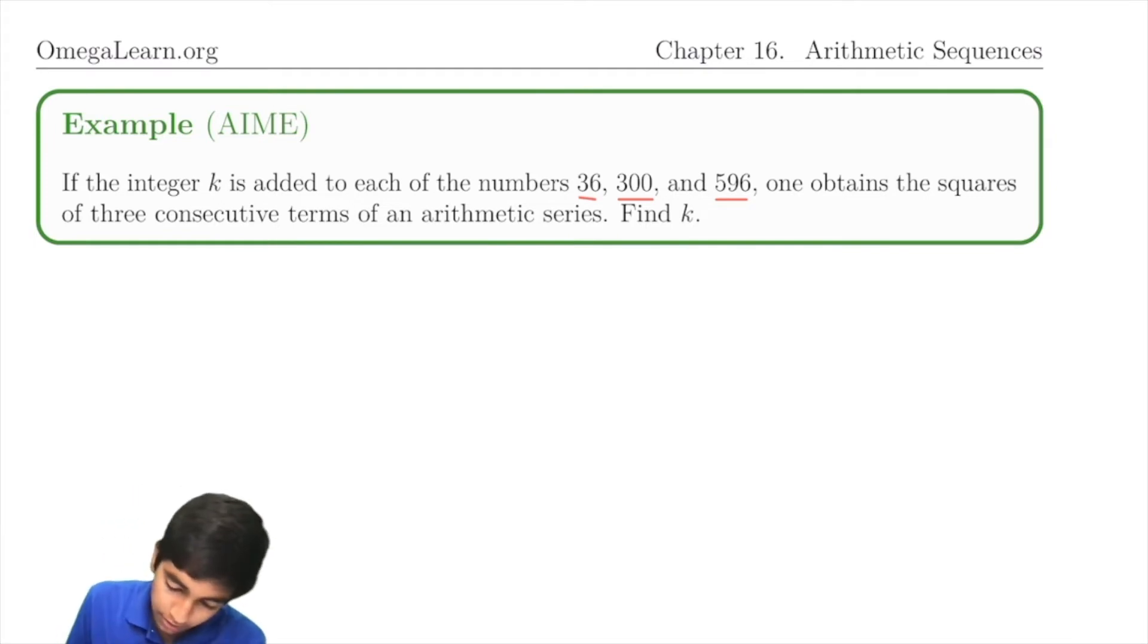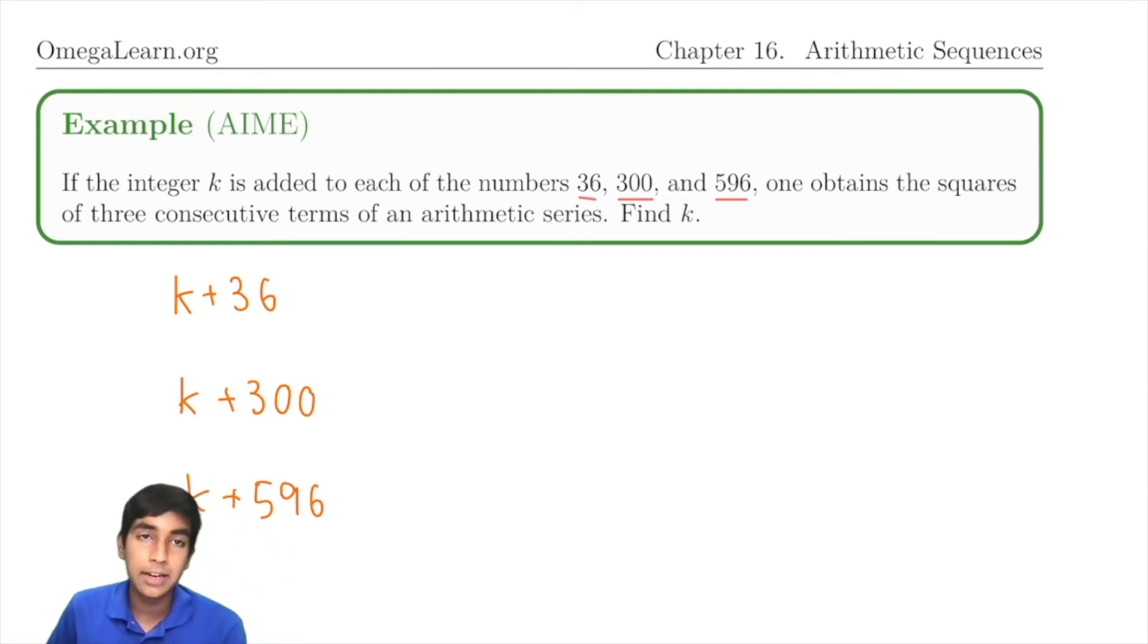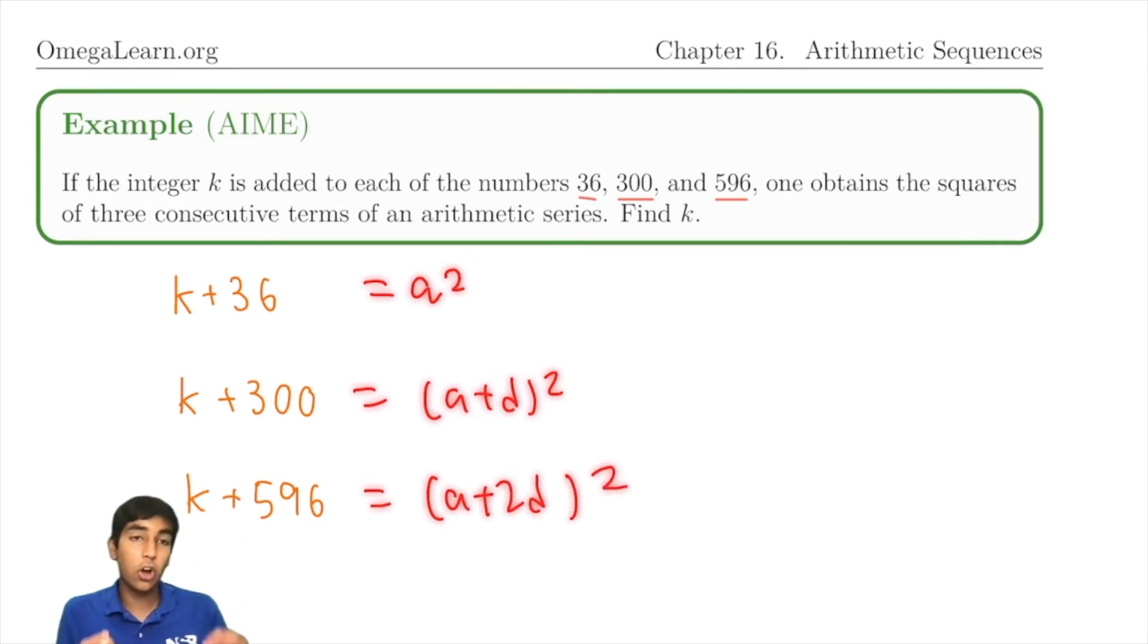What are these sums? k+36, k+300, and k+596. These are the squares of three terms in an arithmetic series. We know what arithmetic series look like. They start off with a, and then we add common differences. You can say this is equal to a squared, this is (a+d) squared, and this is (a+2d) squared. But this is actually harder, because terms will be much harder to cancel out.